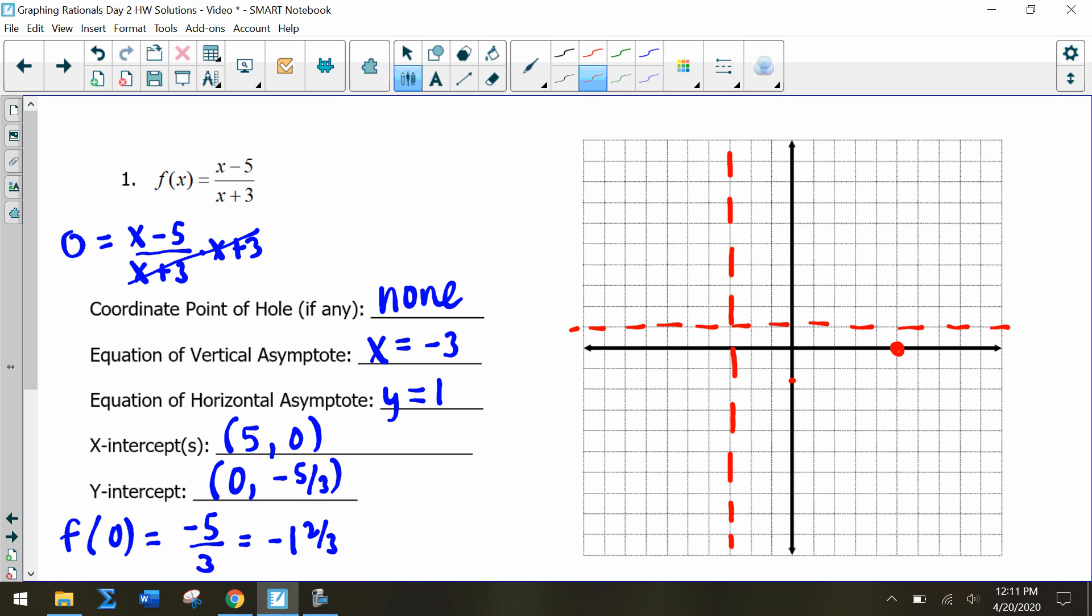We have this piece of the graph that we can go ahead and plot, making sure that we're not touching our asymptotes - we're just going to approach the asymptotes. But now we need to know what else is happening to the graph.